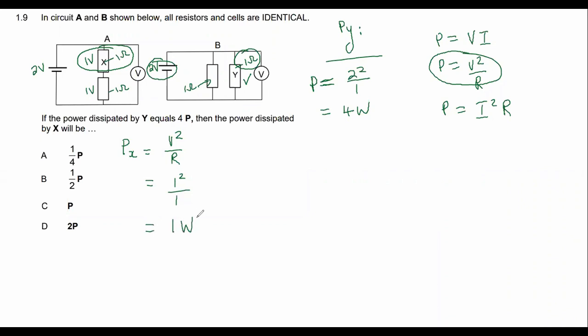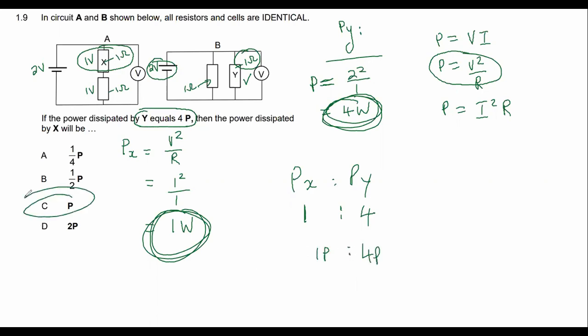Now, I want you guys to look carefully. What we have just found is that the power of Y and the power of X are in a ratio of one to four. So they tell us that the power of Y is 4P. Then what would the power of X be? Well, that would just be one P. And so C is the answer.